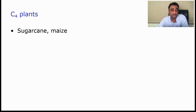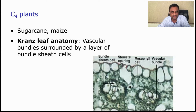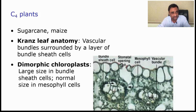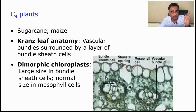The genesis of this difference lies in the important thing — that is Kranz anatomy. Let us know what exactly Kranz anatomy is. Have a look at this diagram. This is the anatomical structure of the leaf. This is the bundle sheath and this is the mesophyll. We say there are dimorphic chloroplasts — meaning there are two different types of chloroplasts: the bundle sheath chloroplasts and the mesophyll chloroplasts.